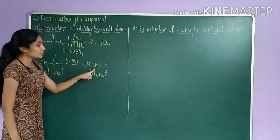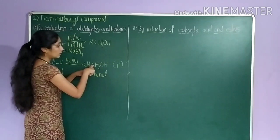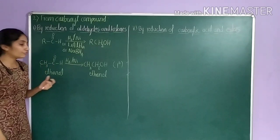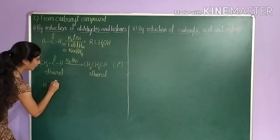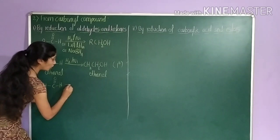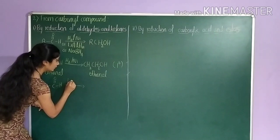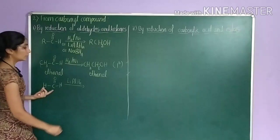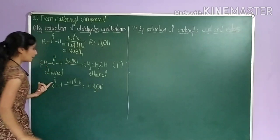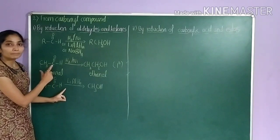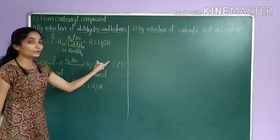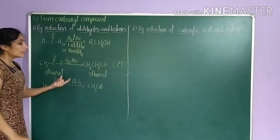This product is a primary alcohol because the carbon bearing the OH group is attached to only one other carbon atom. For formaldehyde, H–C(=O)–H, if you treat it with lithium aluminium hydride (LiAlH4), you get CH3OH, methanol. Formaldehyde is converted into methanol. Here, the alcohol obtained contains the same number of carbon atoms as the reactant. The carbon atom in methanol is attached to no other carbon atom, so this is also a primary alcohol.